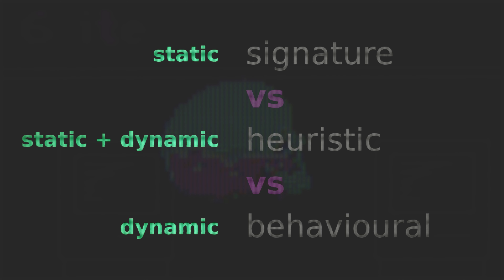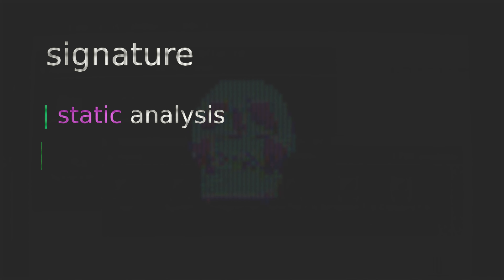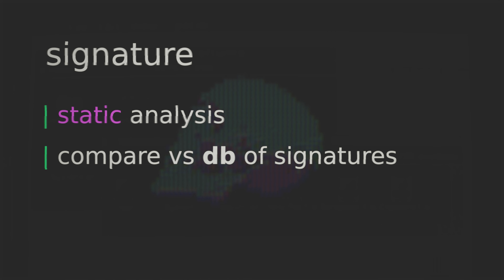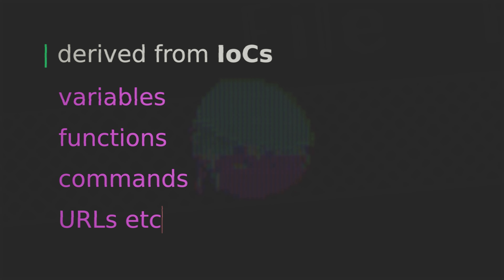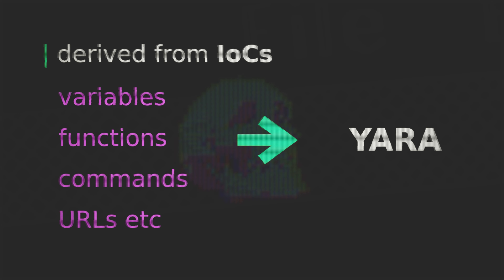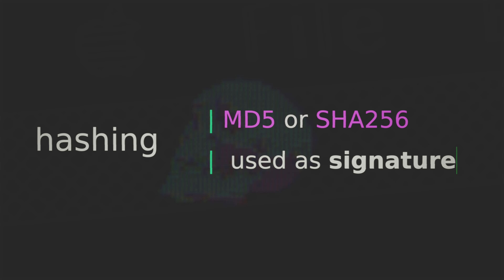Now let's talk about the three main types of actual detection. Each can be considered as being static and/or dynamic. Signature-based detection is mostly static. With heuristic-based detection there is both a static and a dynamic component. With behavioral detection it is mostly dynamic. Signature detection involves comparing the suspected file against a database of known malware signatures. Most signatures for static analysis are derived from IOCs — indicators of compromise. When malware is discovered, a malware analyst will study it and derive a list of unique strings such as variable and function names, specific commands, or URLs.